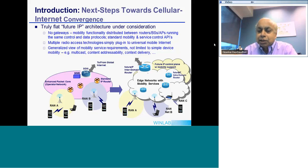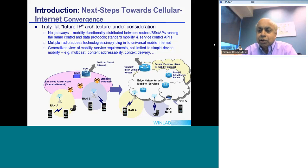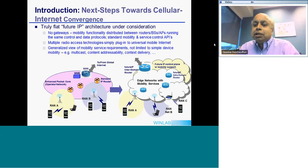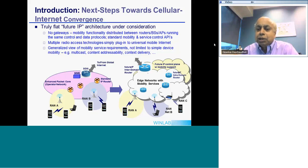In this picture you can see perhaps three different kinds of radio technologies represented as RAN A, RAN B, and RAN C. All of these simply plug in by connecting a base station directly to an internet router. Note that this is not something you can do today except for Wi-Fi, which was designed to be connected to ethernet. You cannot just take a wireless base station and plug it in, and there are many reasons why you cannot do that. The idea is to have a future IP control plane with built-in mobility support plus any other features important going forward.